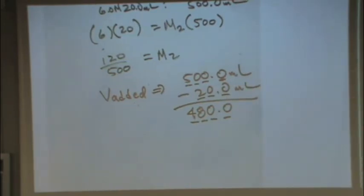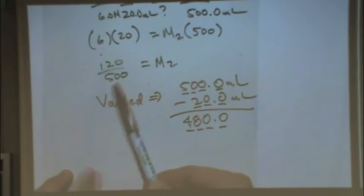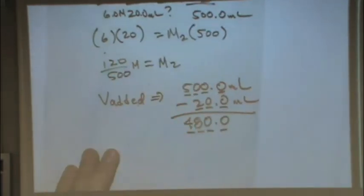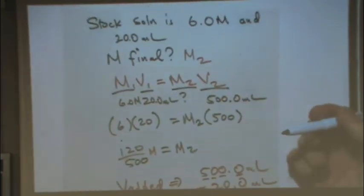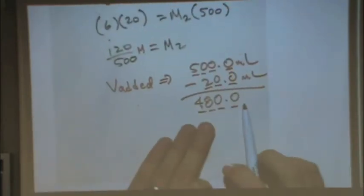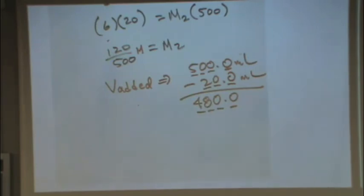A student asked: after finding M2, what's next? It depends on the question. If the question asks for final molarity, you write that value with a capital M and the right number of sig figs — two sig figs here. If the question asks how much volume was added, you do the subtraction calculation, 500 minus 20 equals 480, which is a normal question. Let's move on to stoichiometry.